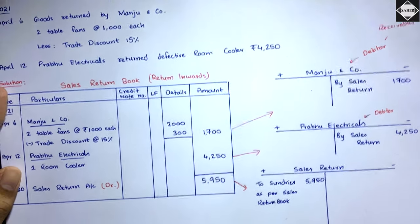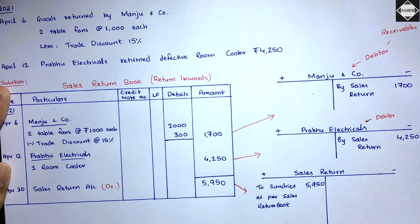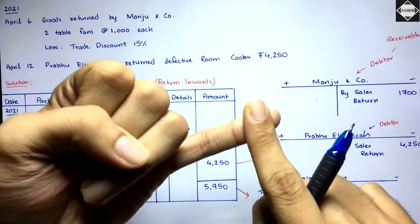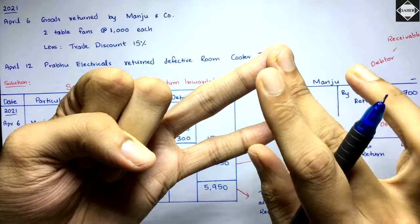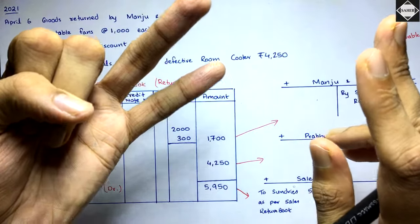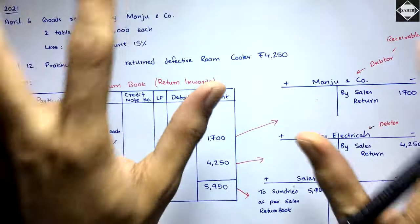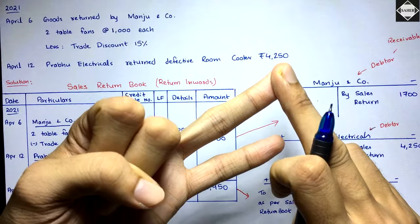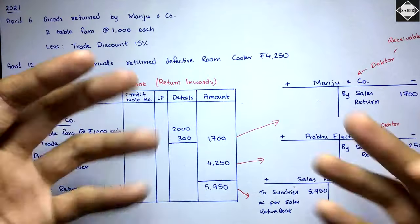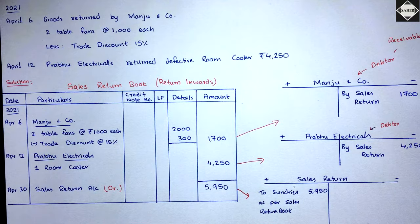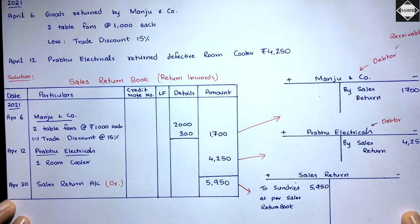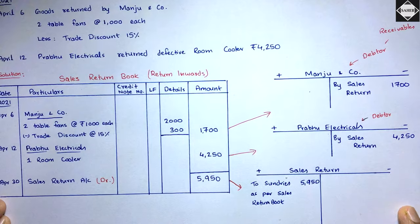One important thing: in sales return book and purchase return book we only record credit returns — goods which were purchased or sold on credit and then returned. Cash returns are not recorded here because cash is involved, so they will go to the cash book. That's it for this video — see you in the next one.